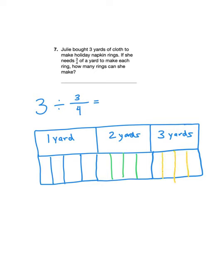Okay, now each napkin ring is going to consume 3/4 of a yard of cloth. So here's one section here that's 3/4 of a yard large. That's going to make one napkin ring.